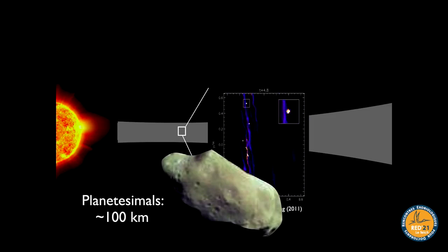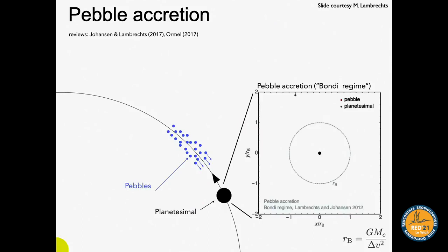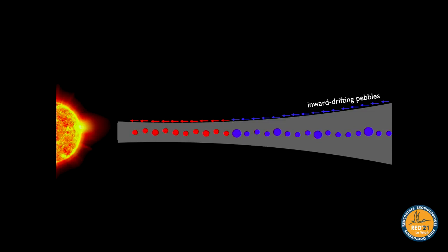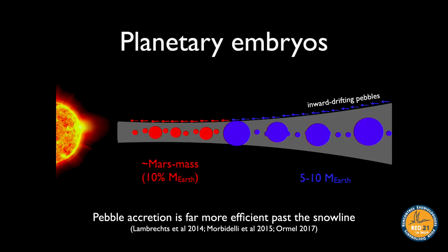Once there's a population of planetesimals, they bash into each other and can also grab onto pebbles via pebble accretion. Planetesimals close to the star are probably rocky; past the snow line where temperatures are cold enough for ice to be a building block, they can contain ice as well. Pebble accretion and planetesimal accretion are faster out past the snow line where ice can be a building block.